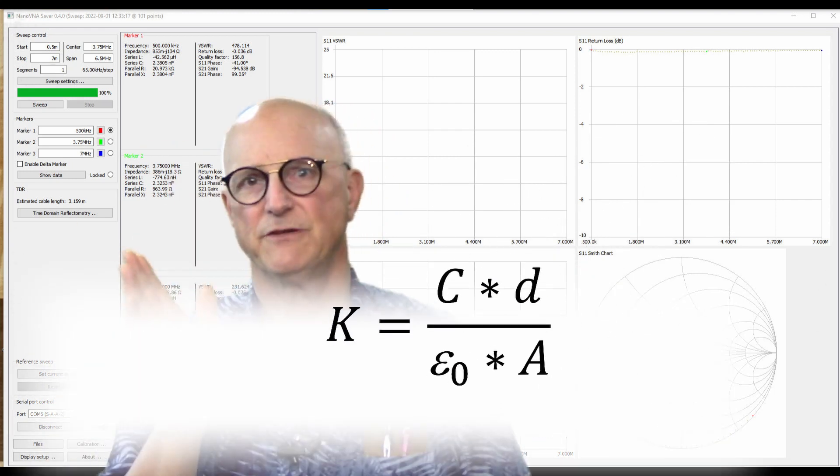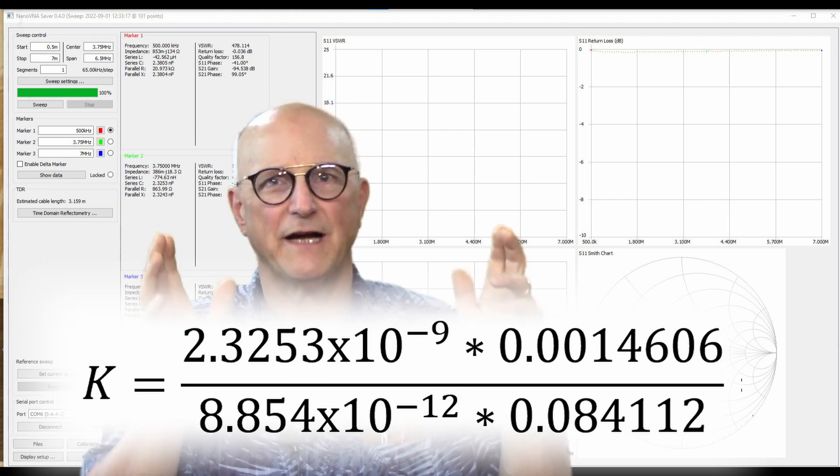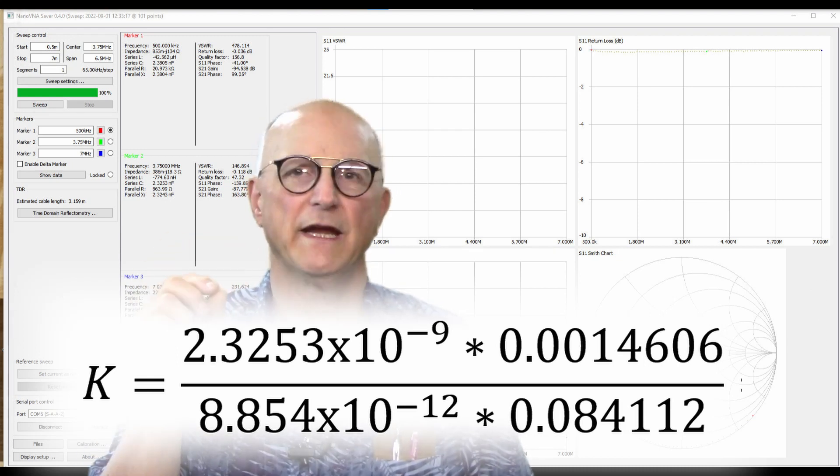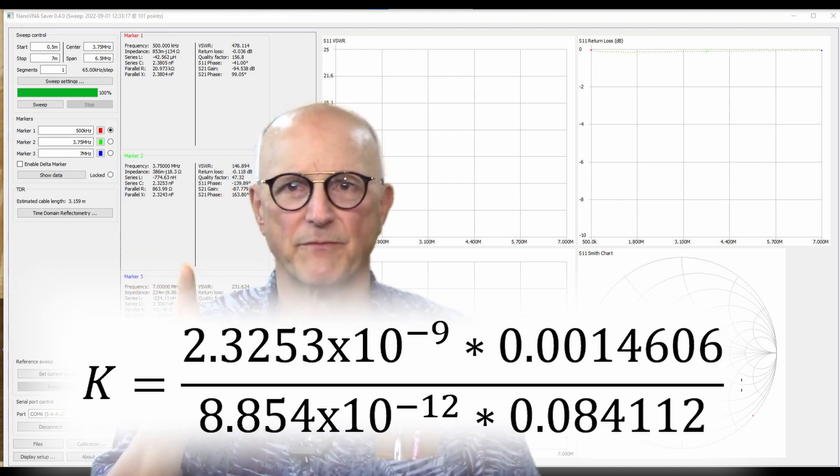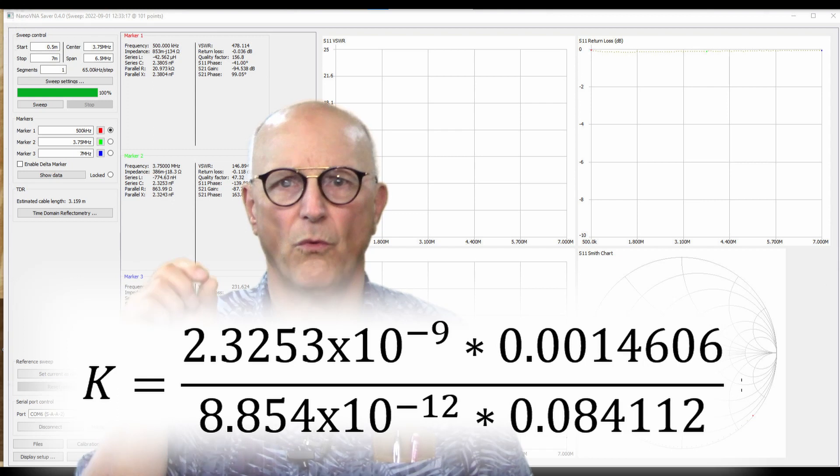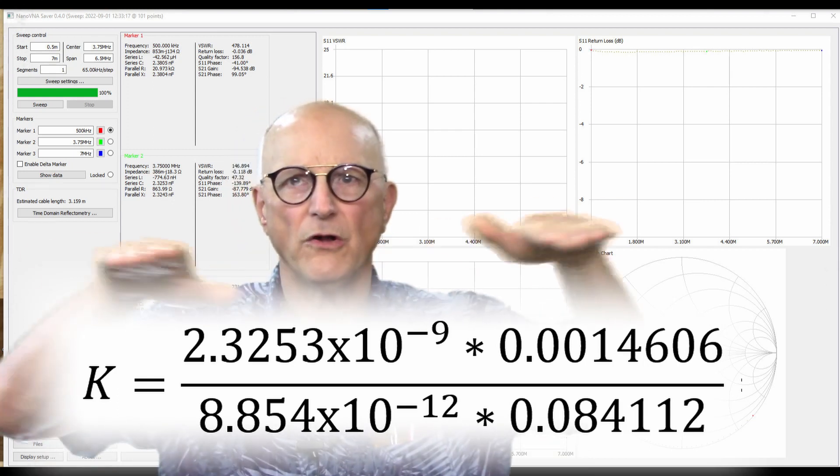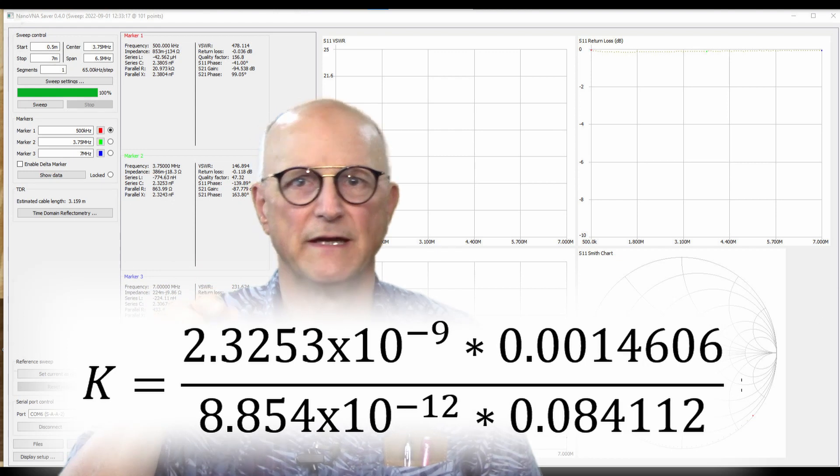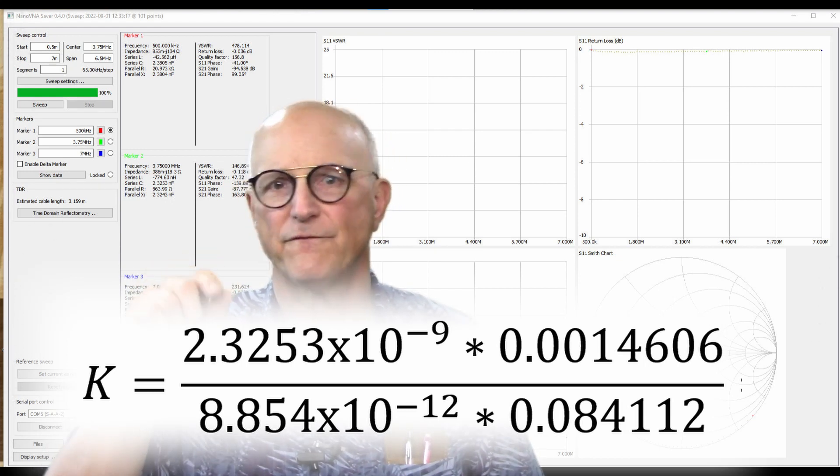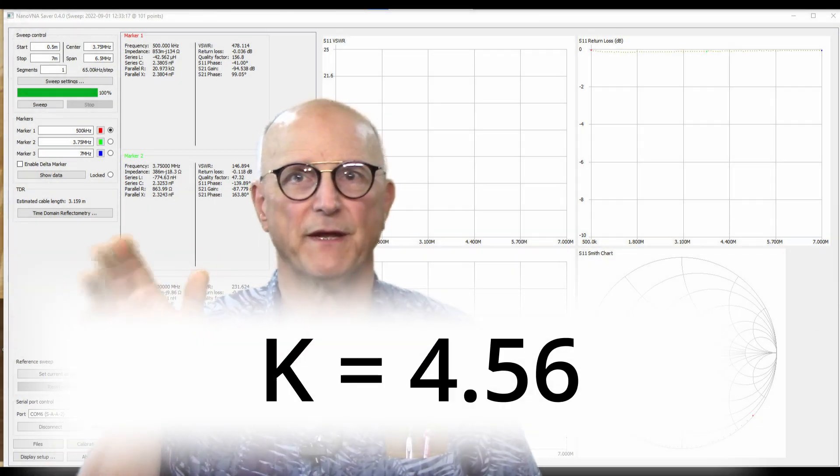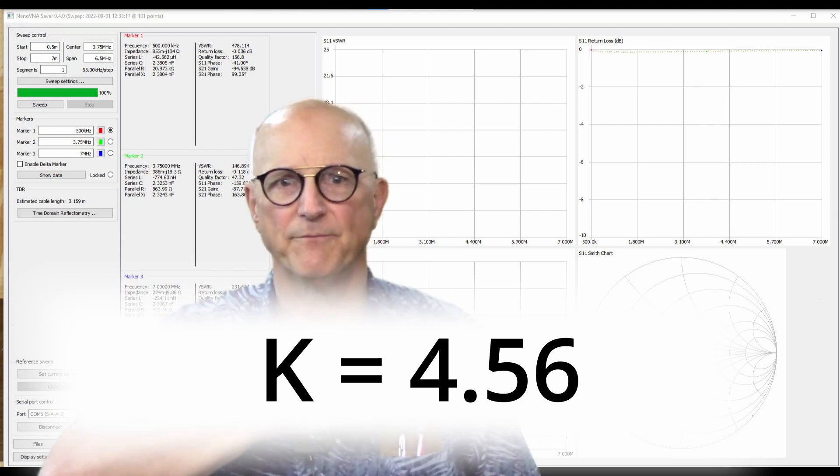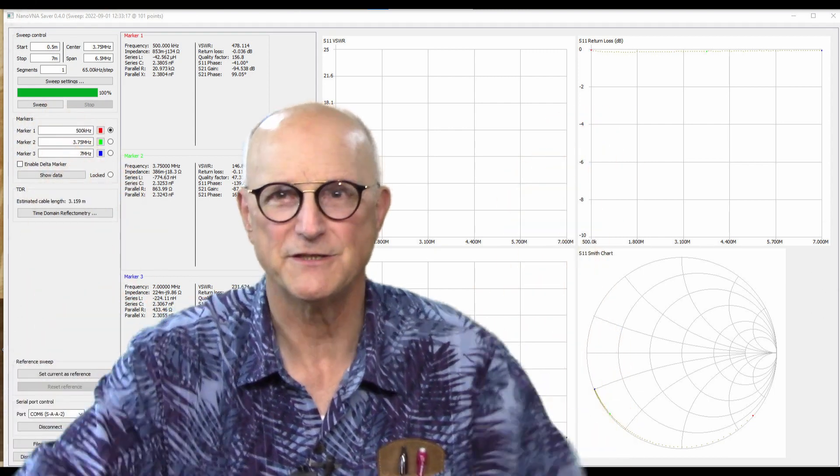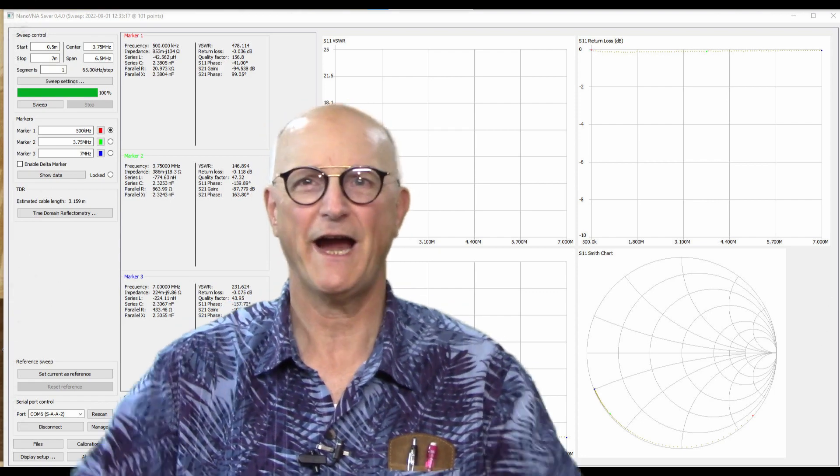So, let's put all of our numbers into our equation. So, the dielectric constant of our dielectric material is equal to 2.3243 times 10 to the minus 9 times 0.0014606 all divided by 8.854 times 10 to the minus 12 times 0.084112 and this comes out to be 4.559. So, the dielectric constant for our PCB substrate turns out to be drumroll please, 4.559 and we are done!